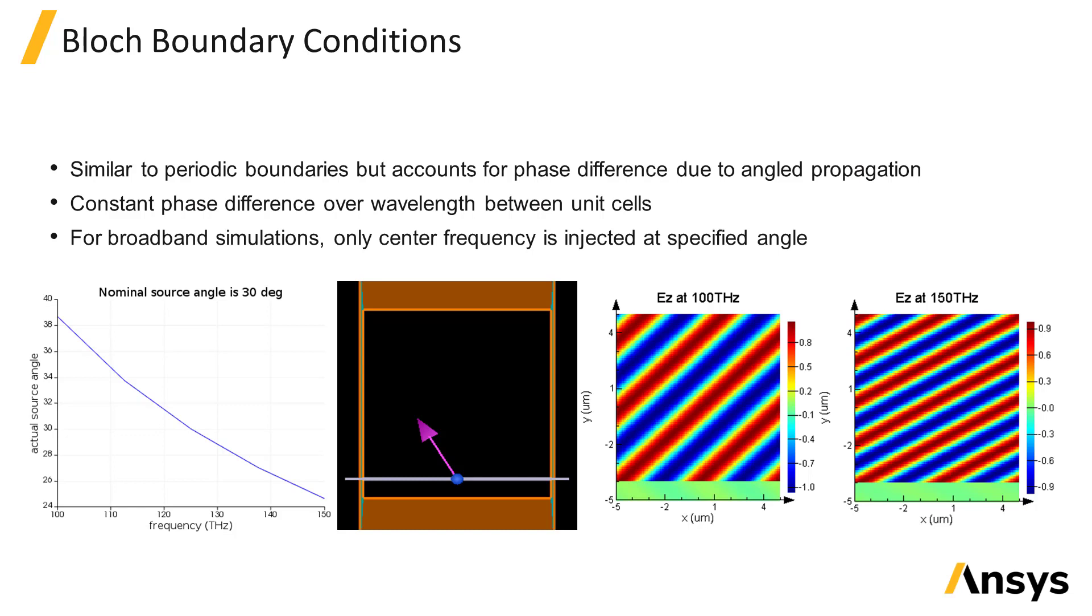The Bloch boundaries enforce a constant phase difference between each unit cell regardless of the wavelength. So if you were to inject light over a broadband range, the angle of injection will vary as a function of wavelength in order to fulfill the phase constraint of the Bloch boundary.